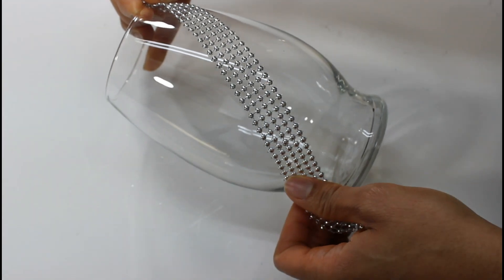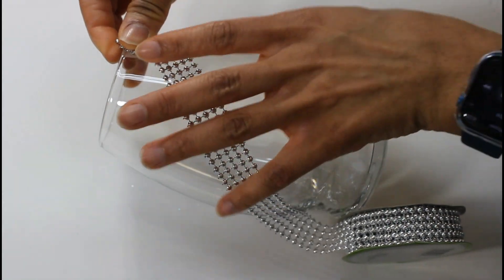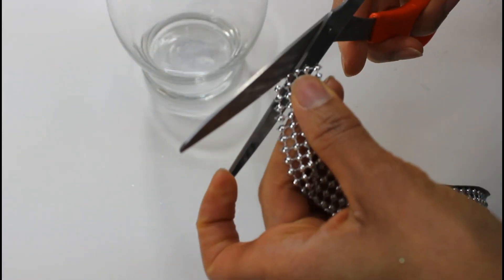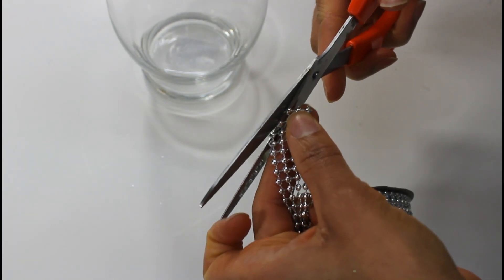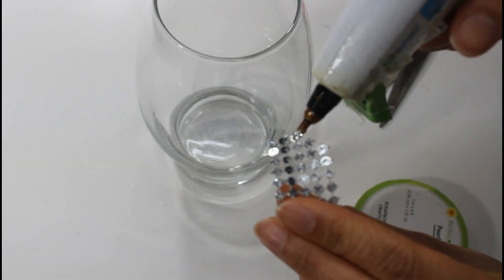Here you just see me trying to decide where I want to place my ribbon. Now, I'm going in with my hot glue gun.